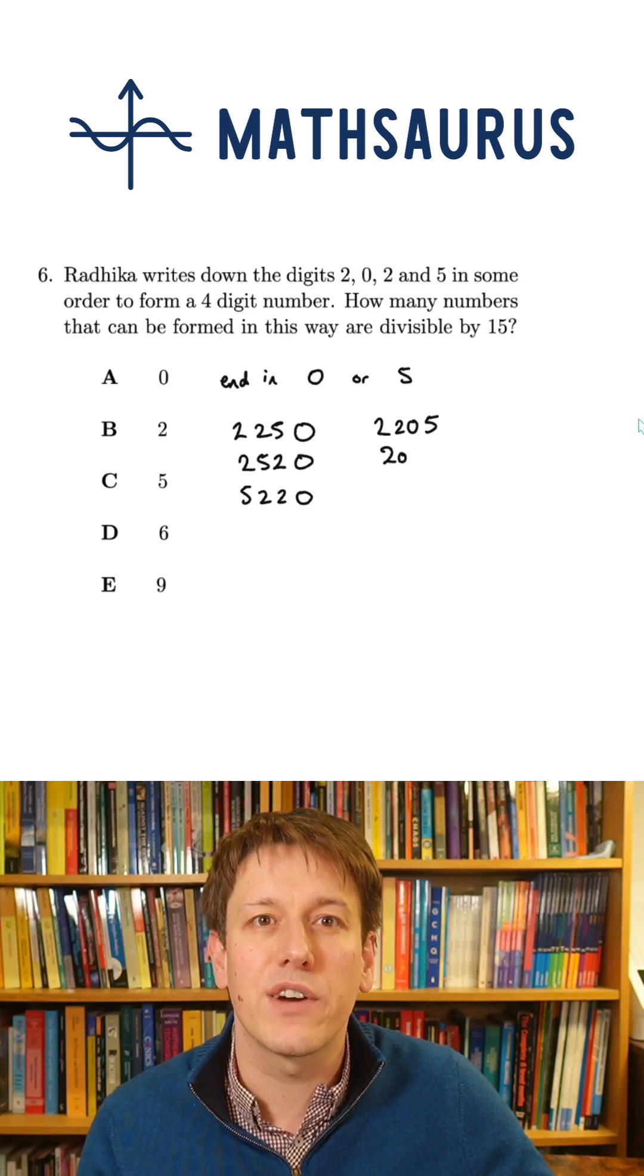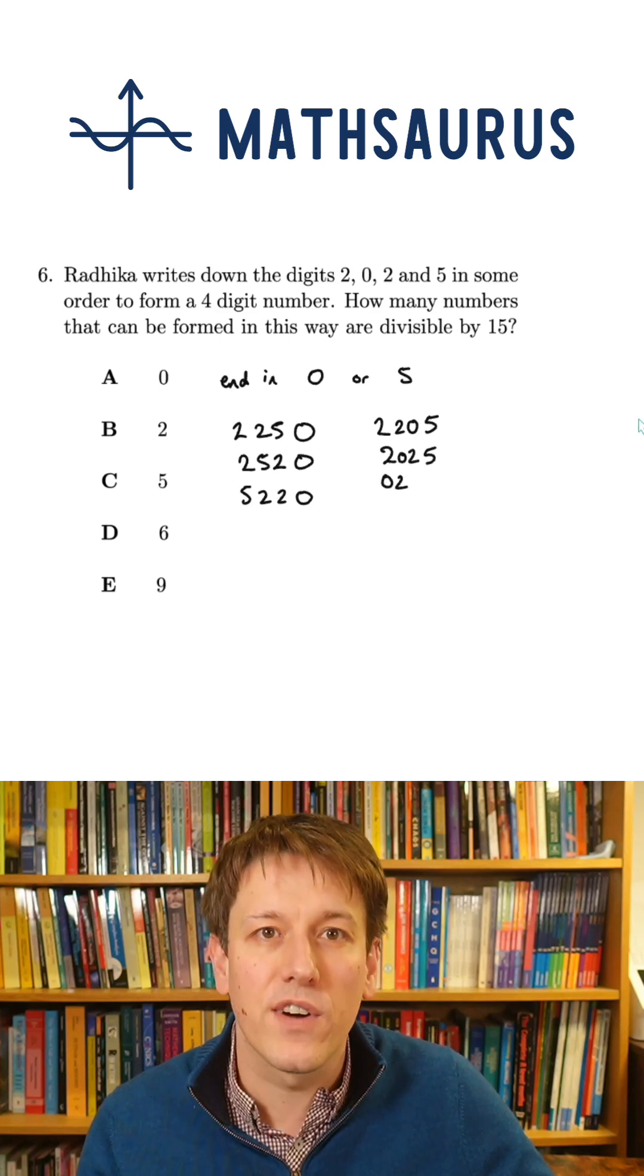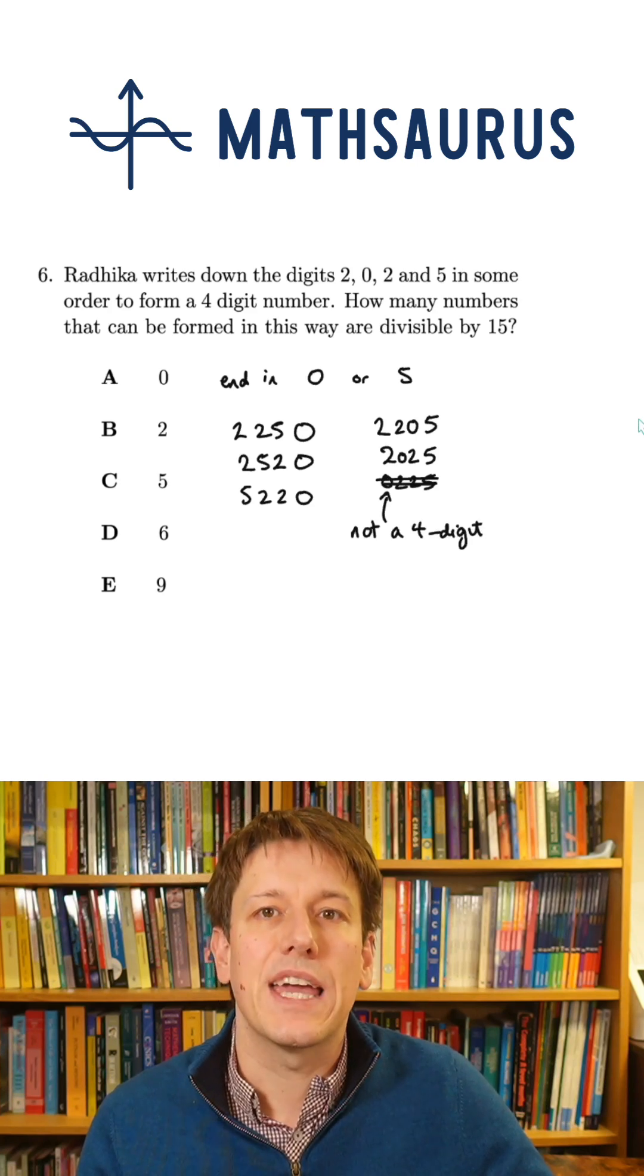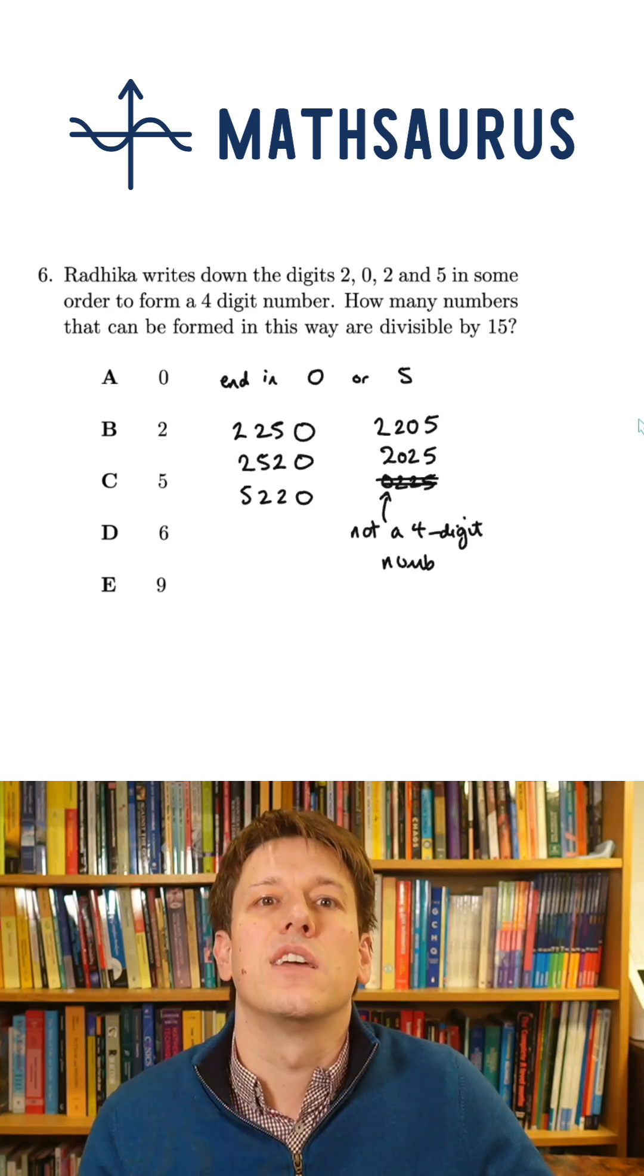If it ends in a 5, I can do 2205. I can do 2025, but 0225 I can't do because that one would not be a four-digit number because it starts in a 0.